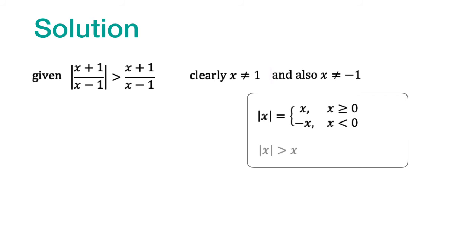It's clear from this definition that mod of x is greater than x only when x is less than 0. So, observing this condition, we can see that (x plus 1) divided by (x minus 1) should be negative.